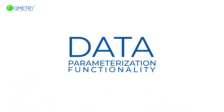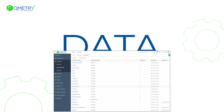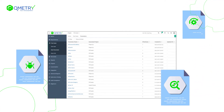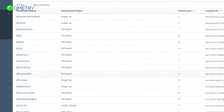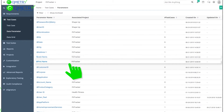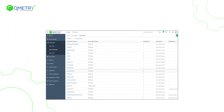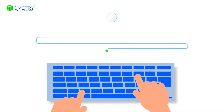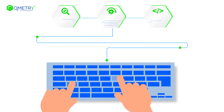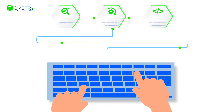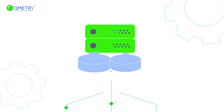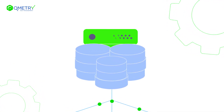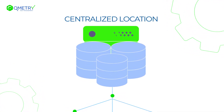The data parameterization functionality in Qmetry allows testers to execute the same test cases multiple times with different data inputs, without the need to create duplicate ones. It replaces the traditional practice of entering hard-coded input values with parameters, making it possible to store all reusable test data in a single centralized location.